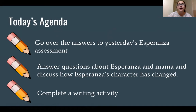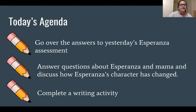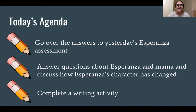The first thing on the agenda is that we're going to go over the answers to yesterday's Esperanza assessment. In yesterday's lesson, we did a short six question assessment on the book so far. If you haven't done that and you'd still like to, feel free to pause and go back to yesterday's learning guide and complete that assessment. Then we're going to answer questions about Esperanza and Mama, discuss how Esperanza's character has changed, and lastly do a quick writing assignment. So let's get started.